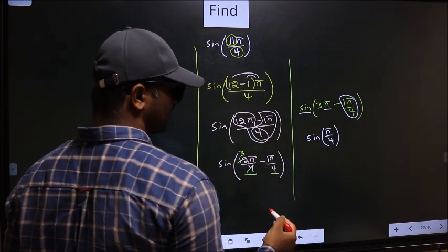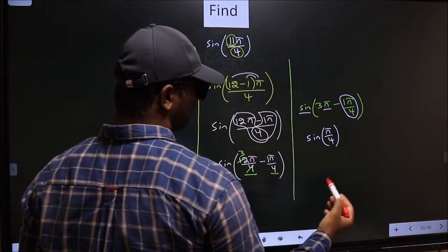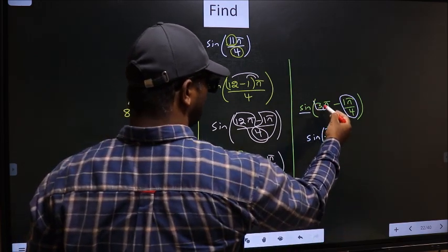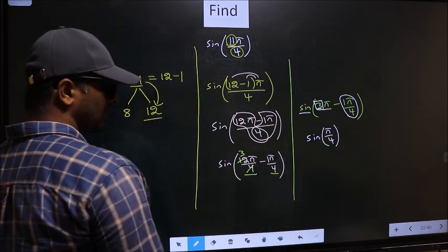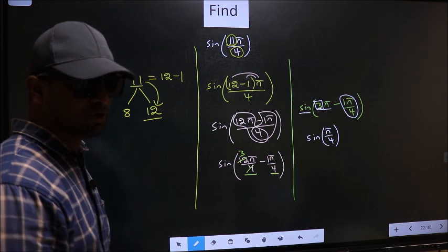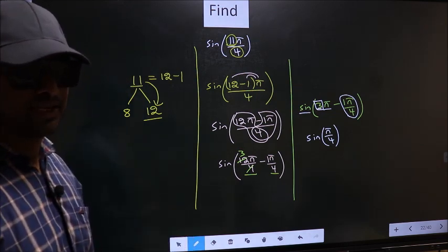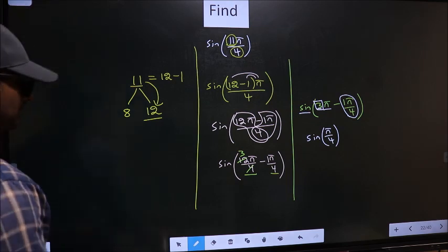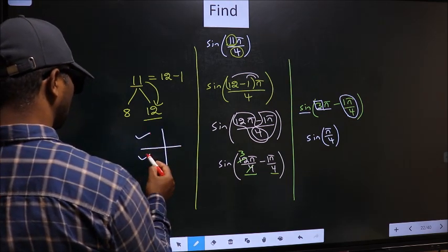Now the question arises, will we get here plus or minus. To answer that, you look at this number before π, which is 3. And 3 is odd. And all the odd multiples of π, they lie in the second or in the third quadrant.